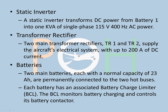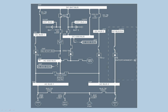Transformer rectifier: the two main transformer rectifiers, TR1 and TR2, supply the aircraft's electrical system with up to 200 amps of DC current. An easy way to remember this — the transformer rectifier rectifies the AC waveform and makes it straight, converting AC to DC. The static inverter is the opposite of the transformer rectifier. So here in the diagram, AC is being converted into DC — that is the transformer rectifier.